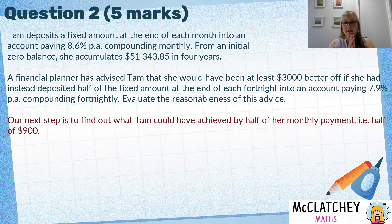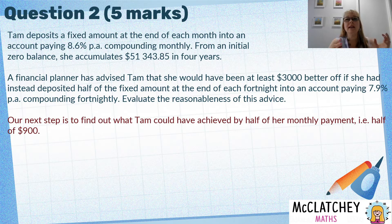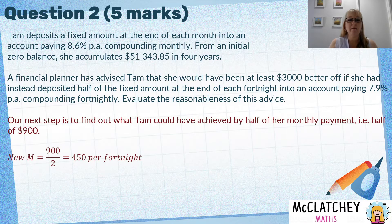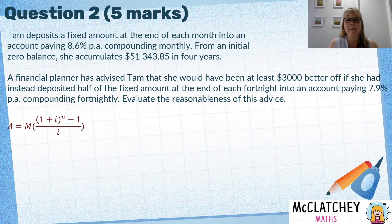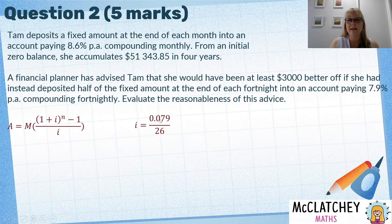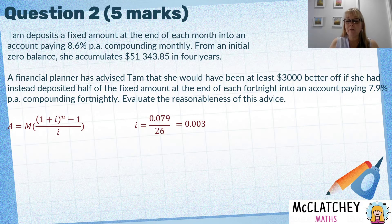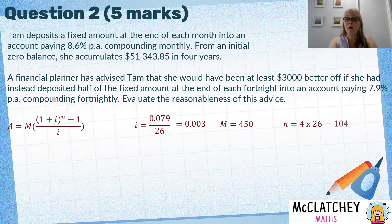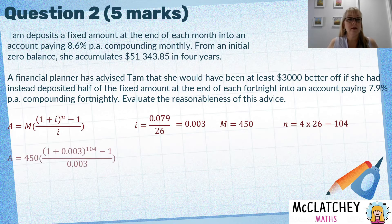Now we need to know what TAM could have achieved if she had followed the financial planner's advice instead. We take that $900 — instead of going in every month, we're now doing it fortnightly. The financial planner said she could deposit half of that amount, so half of $900 is $450 a fortnight. We put that back into the same formula with a new interest rate: 0.079 from the 7.9%, divided by 100 to make it a decimal, then divided by 26 fortnights, giving an interest rate of approximately 0.003. Our M is now $450, and N is 4 years times 26 fortnights, which gives us 104 payments.